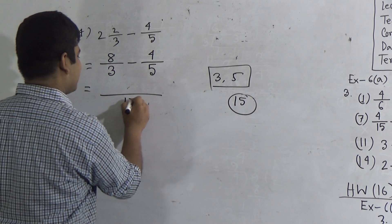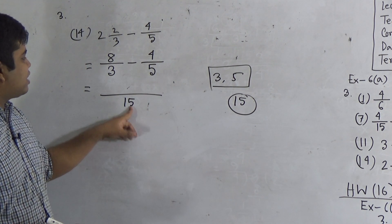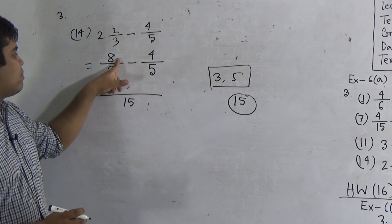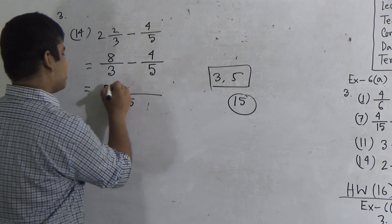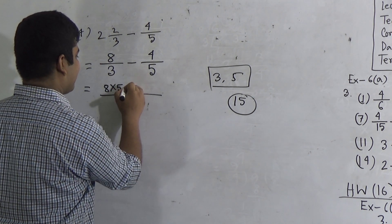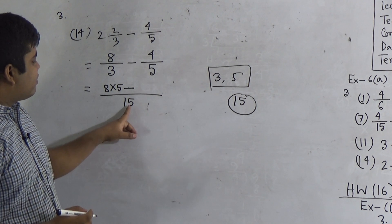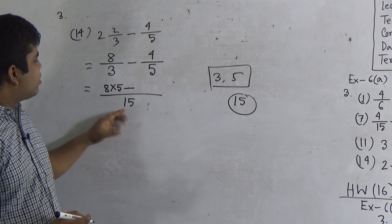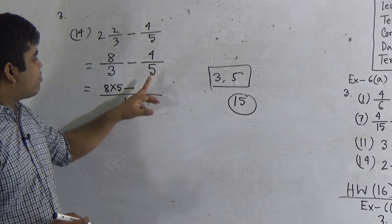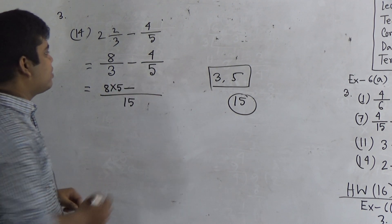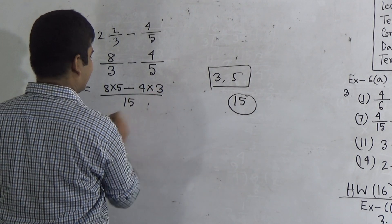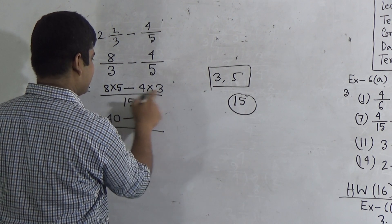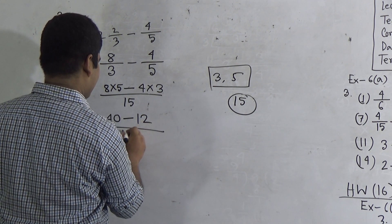So 15 is written as the denominator. Now we divide 15 by 3 and get 5. That 5 is multiplied with 8 — giving 8 times 5. Minus: we divide 15 by 5 and get 3. That 3 is multiplied with 4 — giving 4 times 3. So: 8 fives are 40, minus 4 threes are 12, divided by 15.